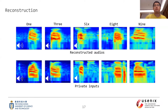Here we show the log mel spectrum of reconstructed audios and the user private audios. Each audio records a one-second human sound saying one digit. We play examples: the input audio for digit 1 followed by the reconstructed audio for digit 1; the input audio for digit 3 followed by the reconstructed audio for digit 3; and the input audio for digit 6 followed by the reconstructed audio for digit 6.